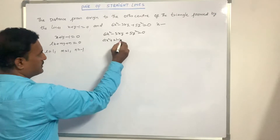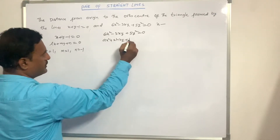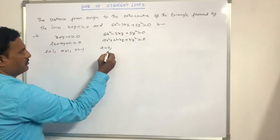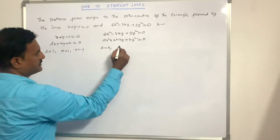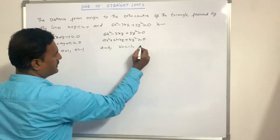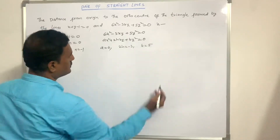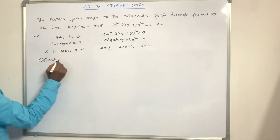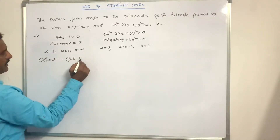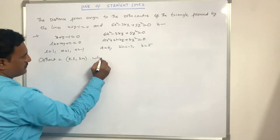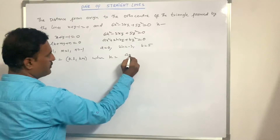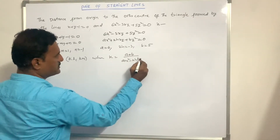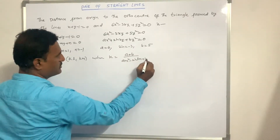The pair of lines 6x² minus 3xy + 5y² = 0 is in the form Ax² + 2hxy + By² = 0. From this, A = 6, 2h = minus 3, and B = 5. The orthocenter is given by (KL, KM), where K = (A + B) / (AM² minus 2HLM + BL²).